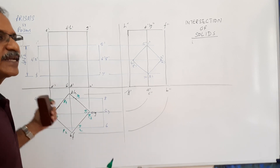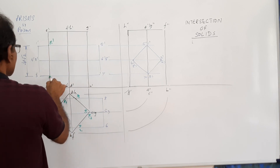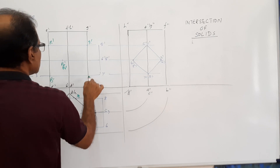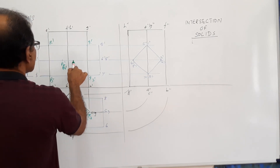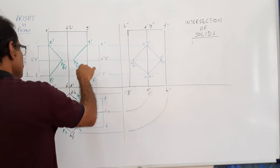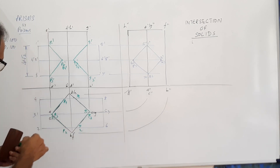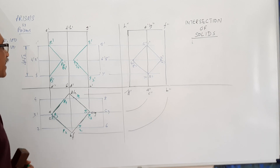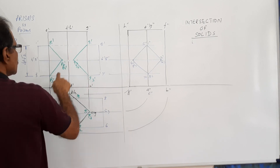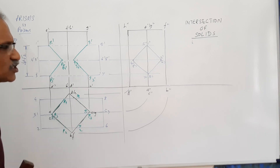Now project the points to the elevation. P1 lies on edge 1-5, so project it upward to get P1′. Similarly, P3 projects to P3′. The projector through P2 coincides with P4, giving P2′ and P4′ at the same location. Likewise, Q1 projects to Q1′, Q3 to Q3′, and Q2′ coincides with Q4′. Connect all points to complete the intersection curve in the elevation.